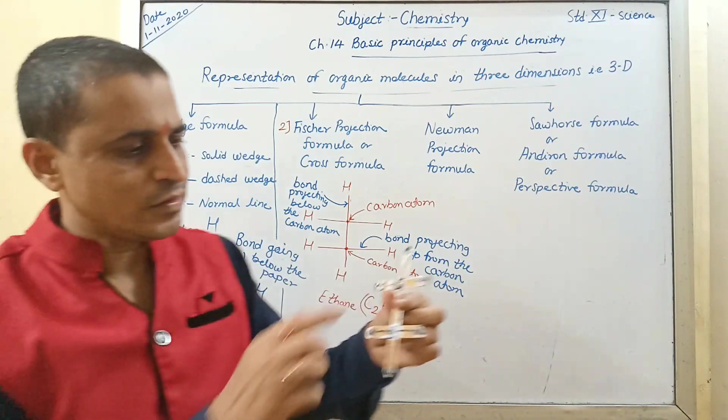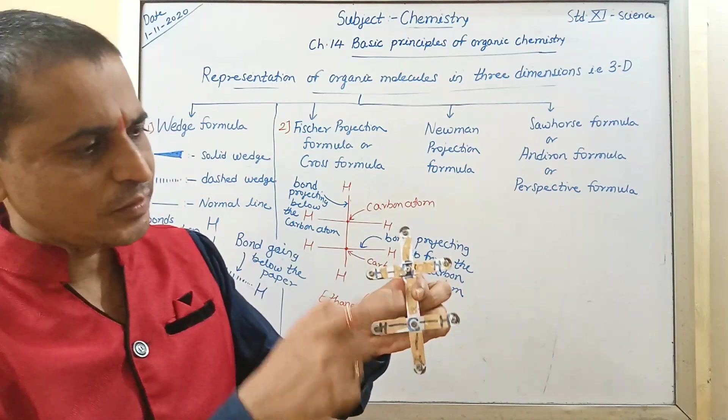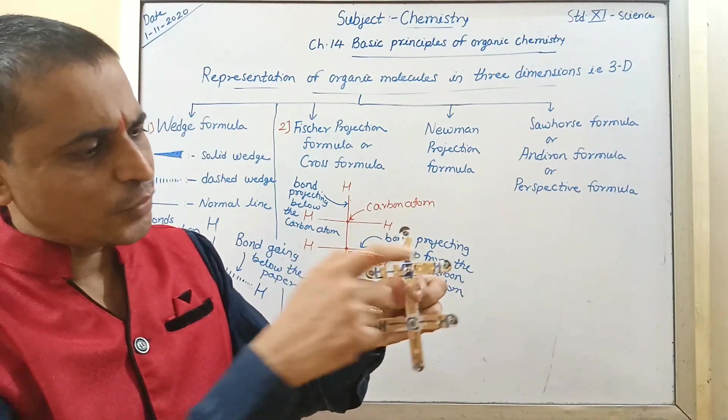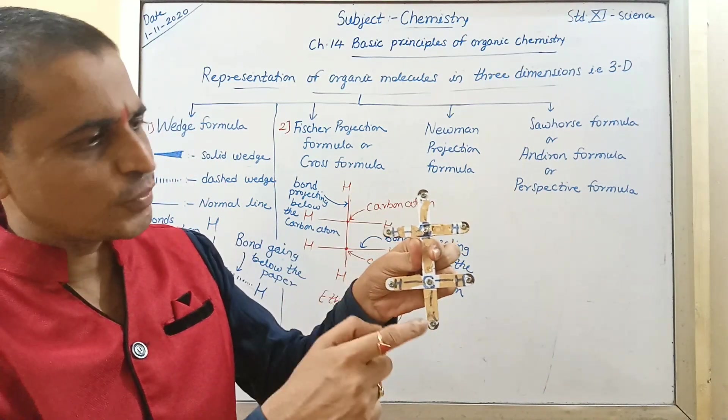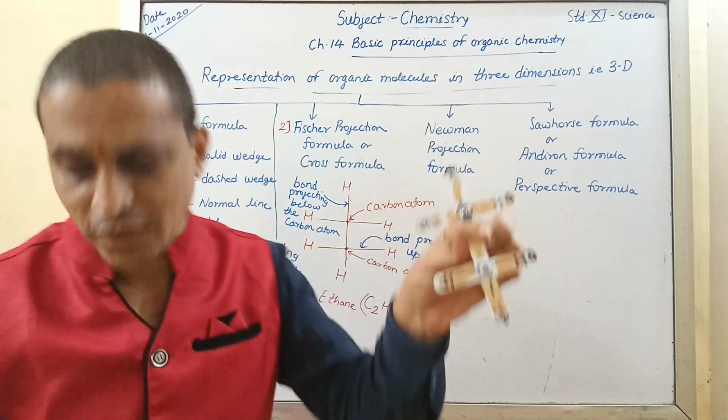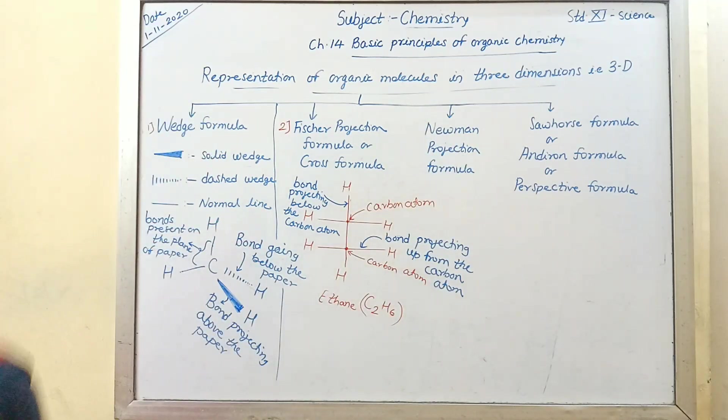This is carbon, carbon, hydrogen, hydrogen, hydrogen, hydrogen, hydrogen, hydrogen. This is the structure of the ethane molecule.